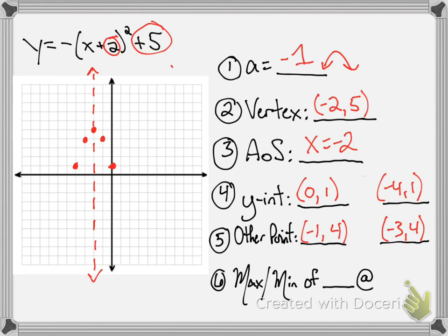Once again, two pairs of points and my vertex. And I've got my parabola. I can establish it has a maximum because it has a peak to it, it has a top point. The maximum occurs at a y value of 5, while the x value that corresponds with that is negative 2.